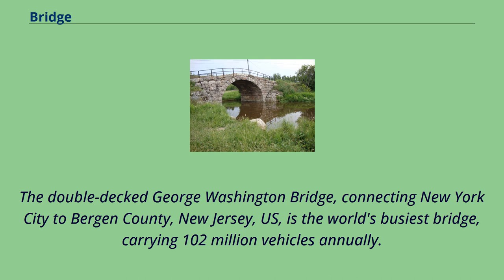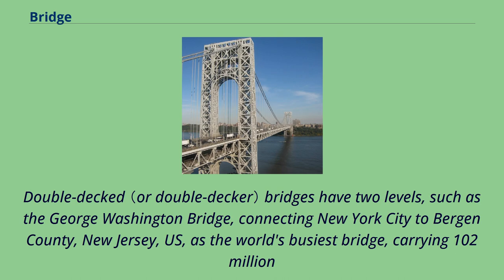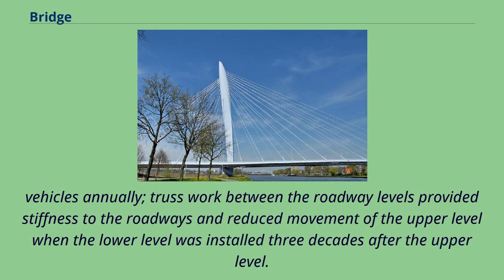The Double-Deck George Washington Bridge, connecting New York City to Bergen County, New Jersey, is the world's busiest bridge, carrying 102 million vehicles annually. Double-decked bridges have two levels, such as the George Washington Bridge connecting New York City to Bergen County, New Jersey.